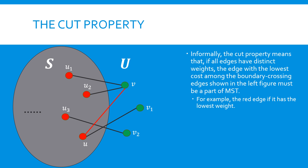For example, consider the graph shown on the left, where all edges are boundary-crossing because they have one end in S and the other end in U. If the red edge has the minimum weight among all boundary-crossing edges, the cut property indicates that it must be included in every MST of the graph.